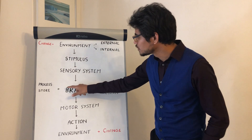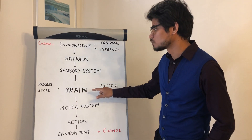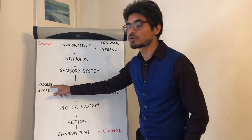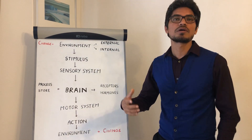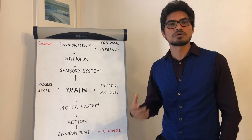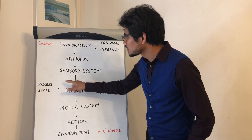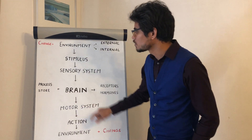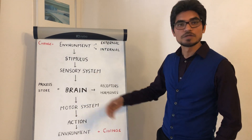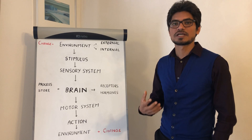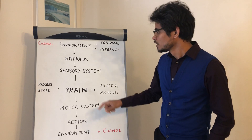When the information reaches our brain, it is usually processed, or it can be stored. After processing, the brain is going to decide an appropriate action.